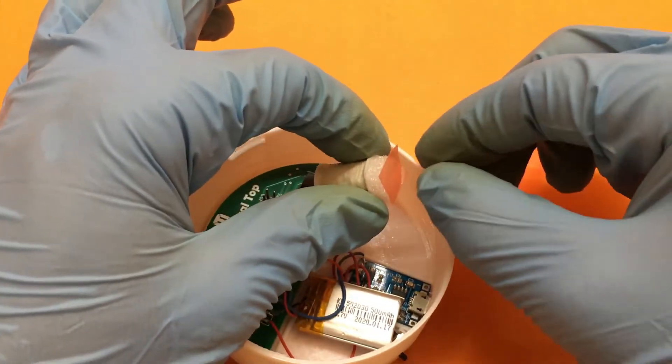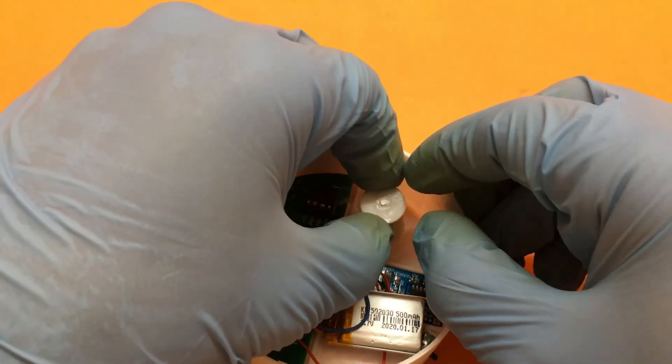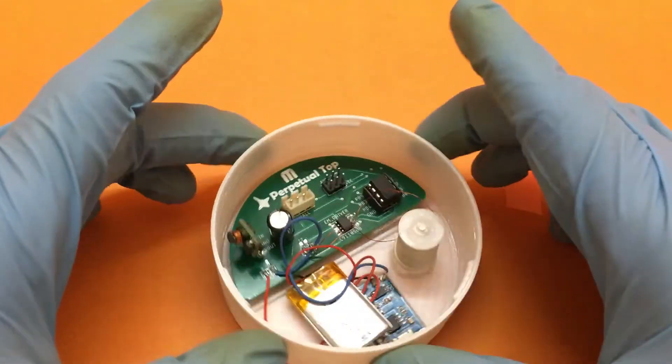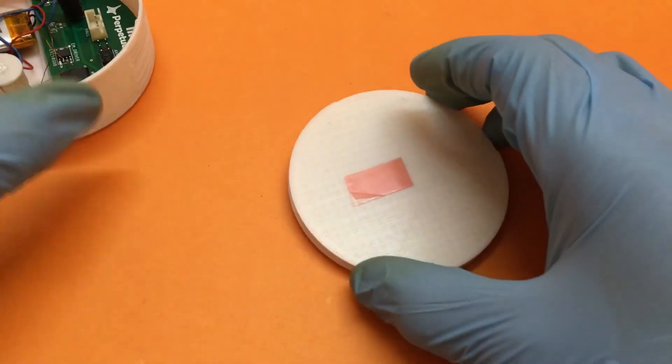Now we will place the electromagnet. Now the base is ready and we can move to the Hall effect sensor.